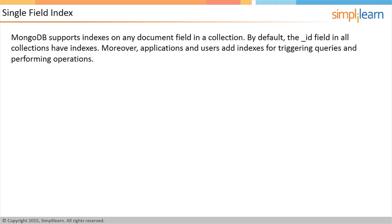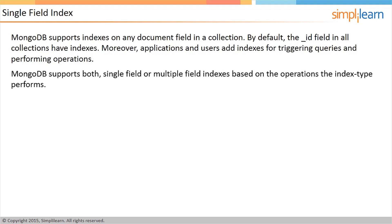MongoDB supports indexes on any document field in a collection. By default, the _id field in all collections has an index. Applications and users can add indexes for triggering queries and performing operations. MongoDB supports both single-field and multiple-field indexes based on the operations the index type performs. The command shown on the screen is used to create an index on the item field for the items collection.